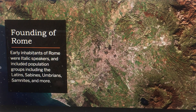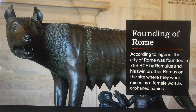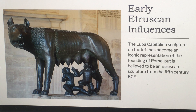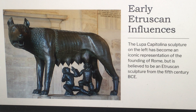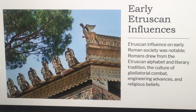The early inhabitants of Rome were Italic speakers, including population groups such as Latins, Sabines, Umbrians, Samnites, and more. According to legend, the city of Rome was founded in 753 BCE by Romulus and his twin brother Remus on the site where they were raised by a female wolf as orphaned babies. This famous sculpture shows them nursing on the wolf. The Lupa Capitolina sculpture has become an iconic representation of the founding of Rome, but it is believed to be an Etruscan sculpture from the fifth century BCE.